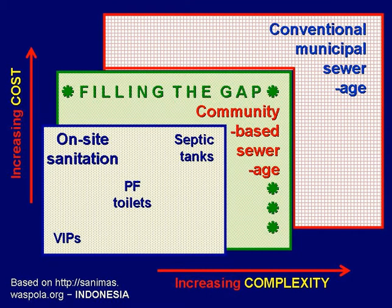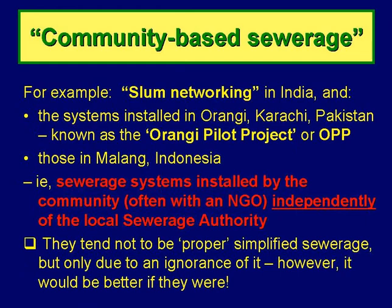This gap is filled by what's called community-based sewerage, which is most common in Asia. Examples include slum networking in India, the sewer system installed in Orangi in Karachi, Pakistan — known as the Orangi Pilot Project — now replicated elsewhere in the country, and Indonesia also has examples. Basically, it's a sewerage system installed by the community, usually with the help of an NGO, independently of the local sewerage authority, because that authority hasn't done anything for the community and is unlikely to do so in the near future. It's not quite the same as Brazilian simplified sewerage, but almost, and really all new schemes should follow the Brazilian model more closely.